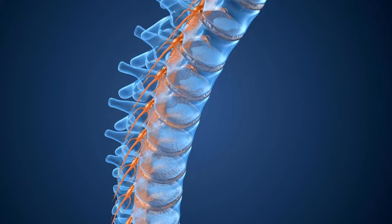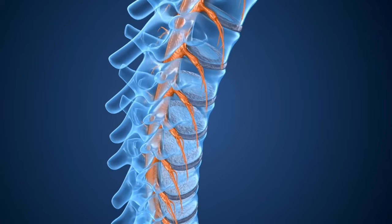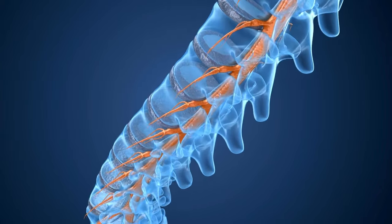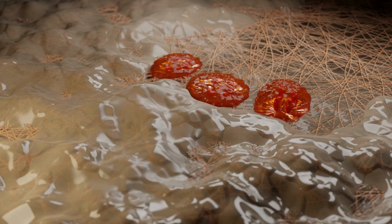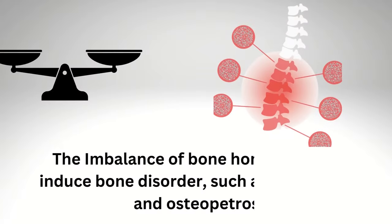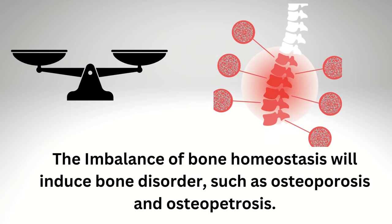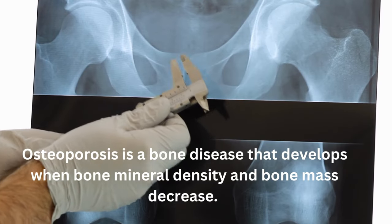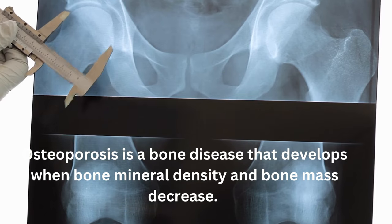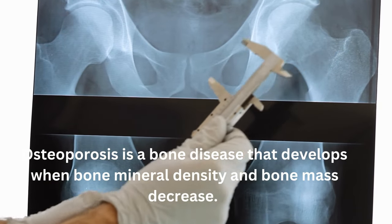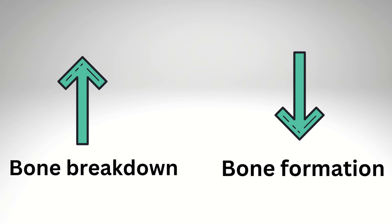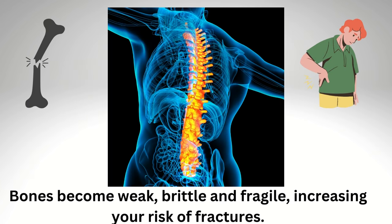The balance between the two phases is crucial for sustaining bone mass and systemic mineral homeostasis. There is a delicate balance between osteoblast bone formation and osteoclast bone resorption, known as bone homeostasis. An imbalance of bone homeostasis will induce bone disorders such as osteoporosis and osteopetrosis. Osteoporosis is a bone disease that develops when bone mineral density and bone mass decrease — when the creation of new bone can't keep up with the loss of old bone, causing bones to become weak, brittle, and fragile, increasing your risk of fractures.